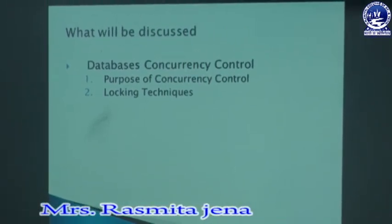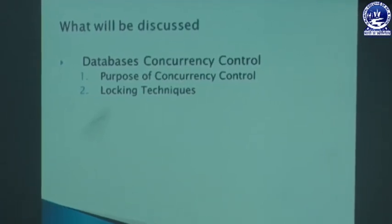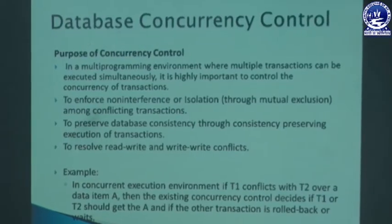First, we will discuss the locking technique used to control the concurrency execution of transactions. In a multiprogramming system, the number of transactions are executed simultaneously, and there may be chances of interference of other transactions, failure of one transaction, or a transaction may be in a deadlock situation for a long period of time. Also, the isolation property of a transaction may be violated. To overcome these problems, we use concurrency control techniques.